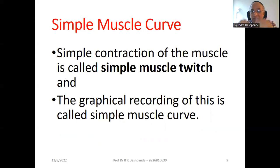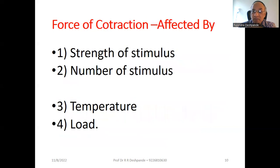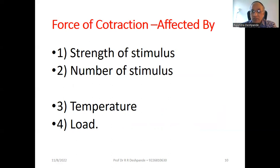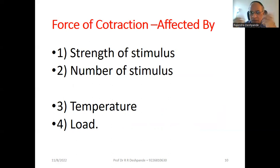Simple contraction of the muscle is called a simple muscle twitch, and the graphical recording of this simple muscle twitch is called the simple muscle curve. The force of contraction is affected by: number one, the strength of the stimulus; number two, the number of stimuli; number three, temperature — both cold and hot; and number four, the load, for example 5 kg or 10 kg of weightlifting.